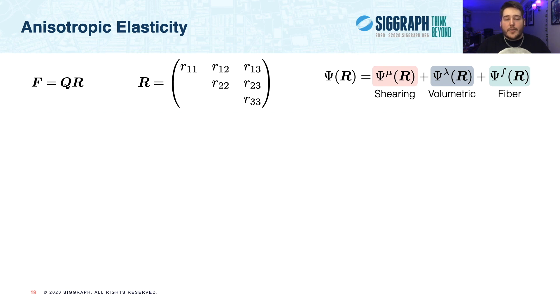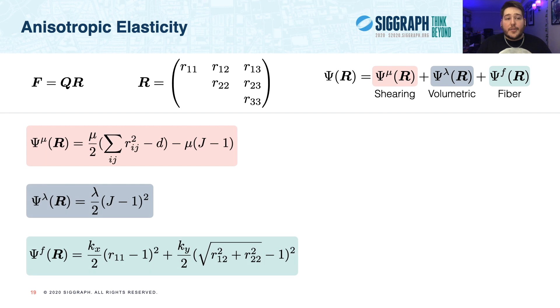However, before we detail that, we'll write our energy in more familiar terms. So specifically, we adopt the stable Neohokian energy density, which we break down into a shearing term, psi-mu, and a volumetric term, psi-lambda. And to add anisotropic behavior to our model, we further introduce a fiber term. And this fiber term itself has two terms. The first penalizes stretching in the principal fiber direction with stiffness kx, and the second penalizes stretching in the secondary direction with stiffness ky. We set kx and ky by multiplying the material's mu parameter by a fiber scale parameter, gamma.